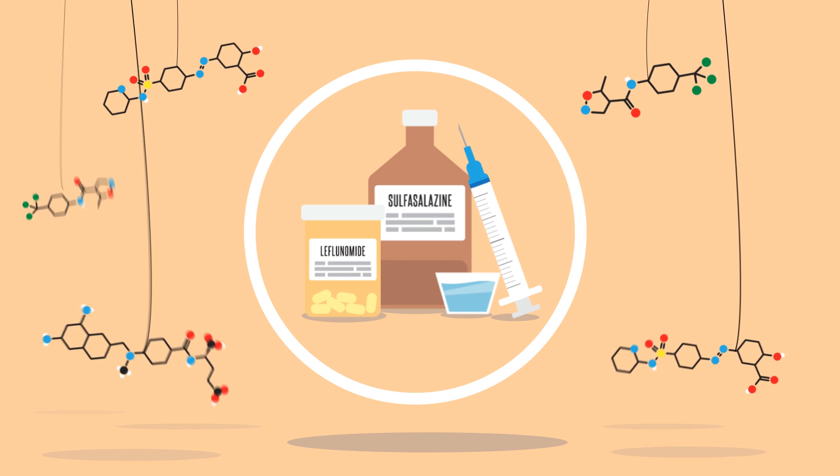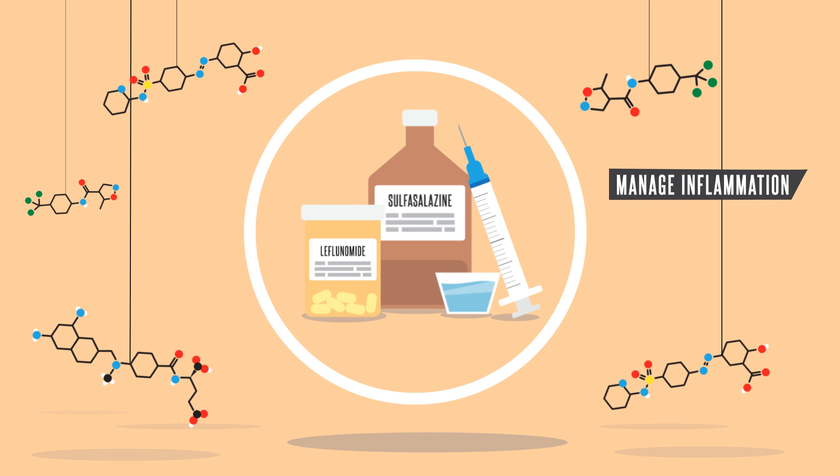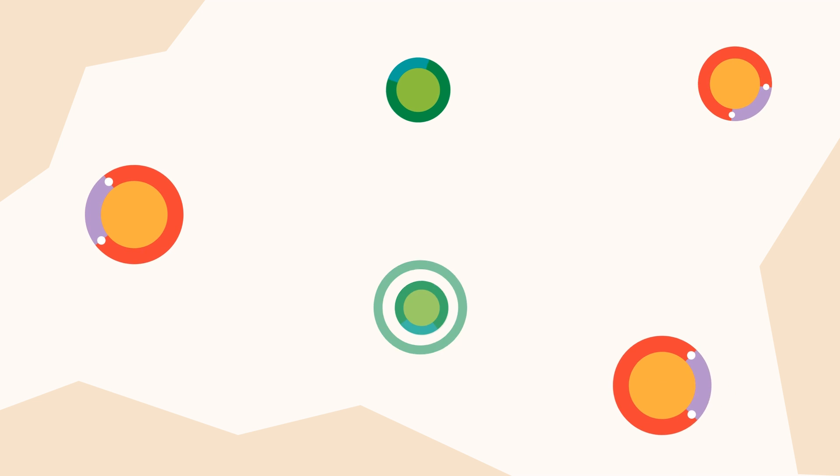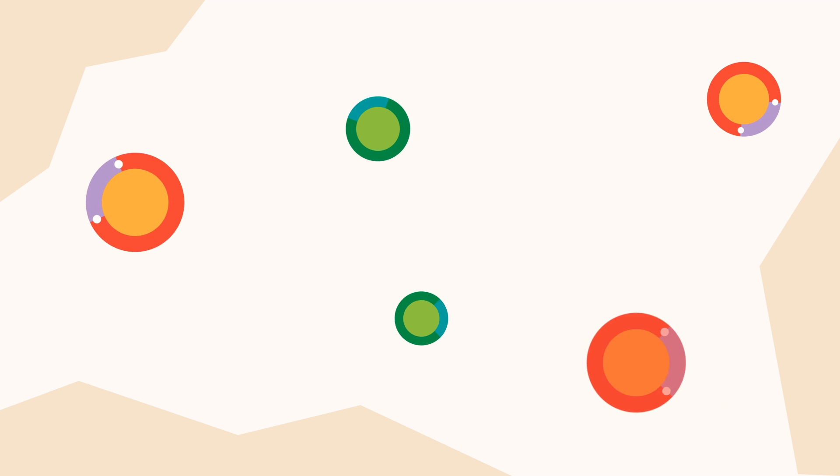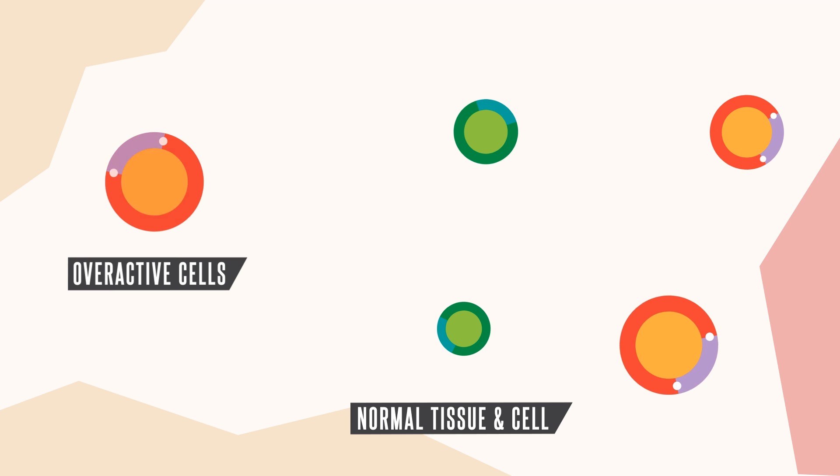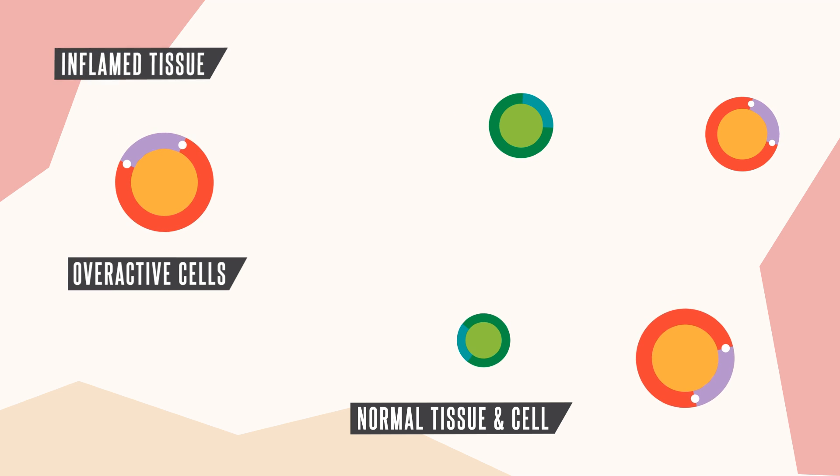Disease-modifying antirheumatic drugs are medications that work to manage and reduce inflammation and prevent permanent joint damage. Inside the tissues of your body, there are many cells that work as a part of the immune system. When you have an inflammatory disease, there are some cells that work normally, and some overactive cells that are causing unwanted inflammation.